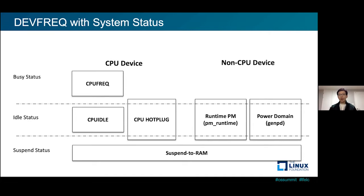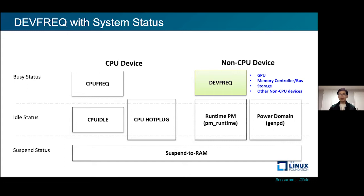Traditionally, we almost focused on the CPU device for performance and power. As I said, we now need to consider non-CPU devices as well. On the left side there are frameworks for CPU, and on the right side are frameworks for non-CPU. The runtime PM and general power domain frameworks support dynamic power control for device on and off. Device frequency supports DVFS on the same layer as CPU frequency. Device frequency is very similar to CPU frequency, but it has unique features which I will explain in this talk.